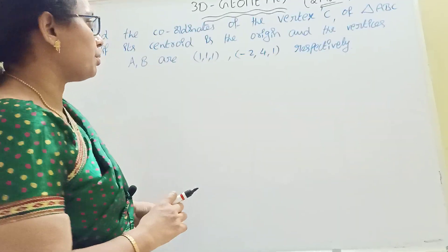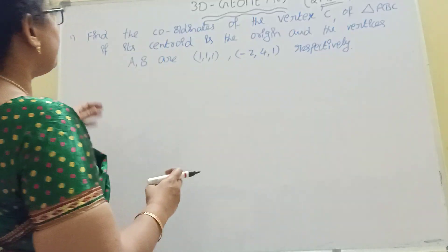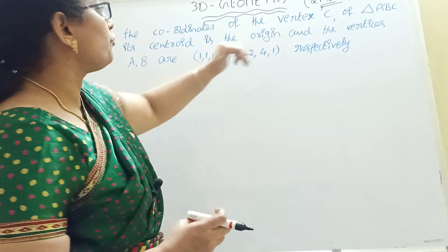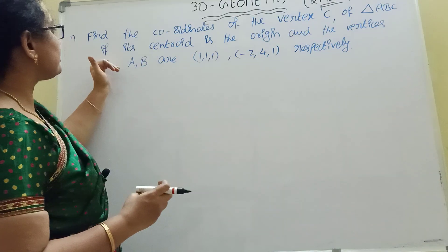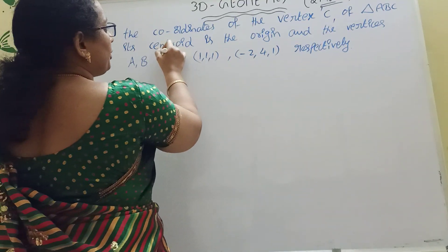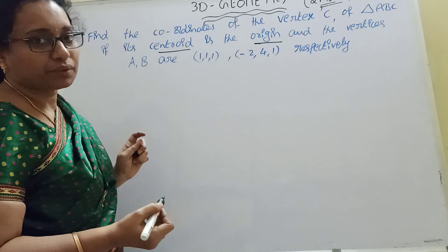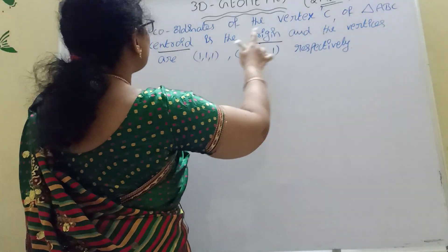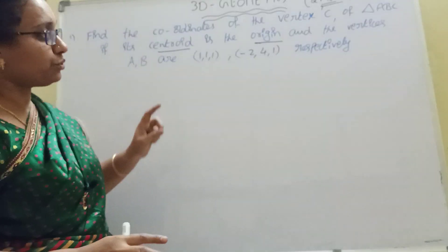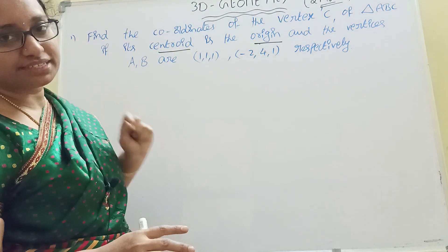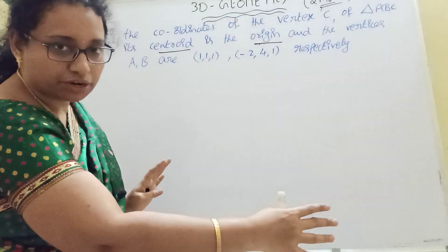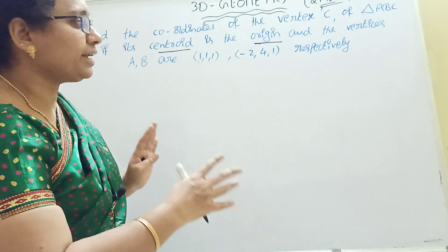3D geometry 2 marks. Here you remember what this is. Find the coordinates of the vertex C of triangle ABC if its centroid is the origin. Centroid is the origin. The origin is 0,0,0 and the vertices are A, B. Find the vertex C. And the centroid is the third vertex condition. Find the vertex - how to do it.